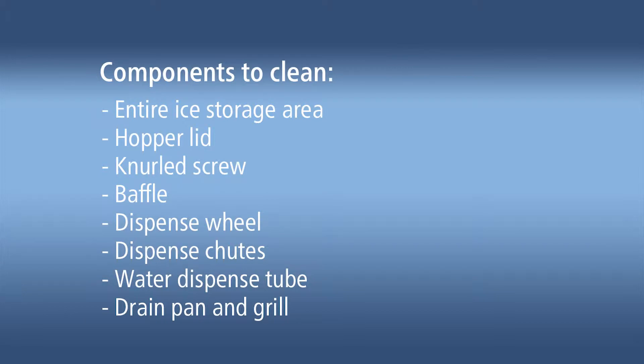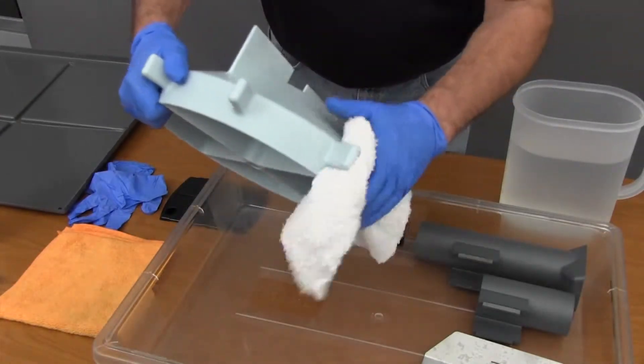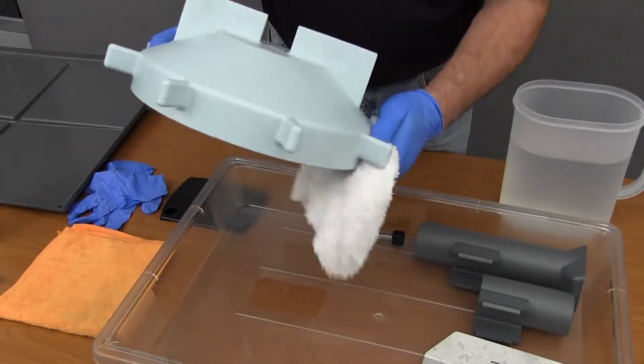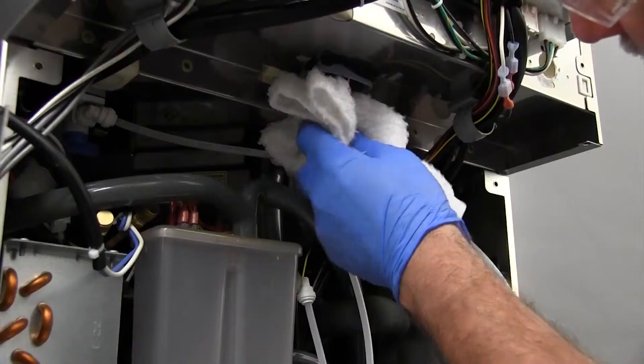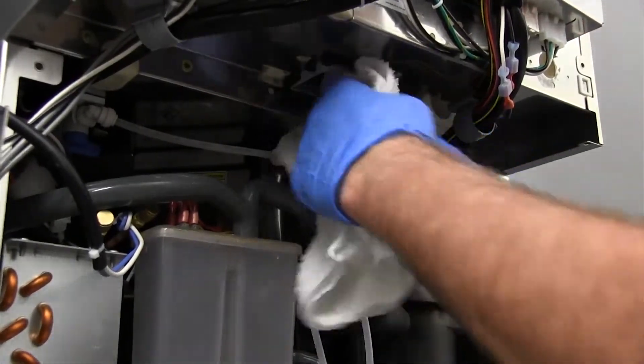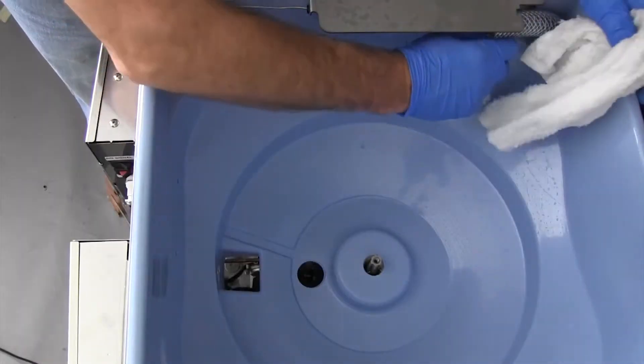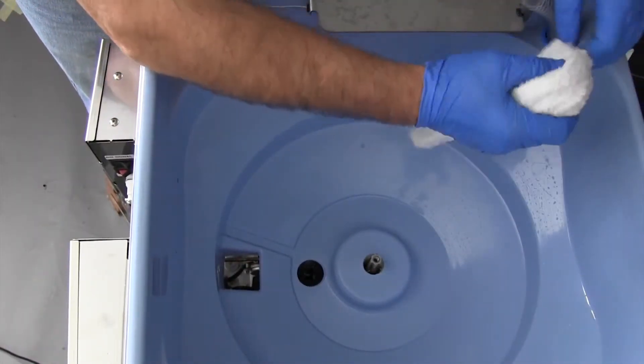Wipe each of the component surfaces with the SafeClean solution. Spraying the solution is not effective. Use only a soft cloth to avoid damage to surfaces. Do not use abrasive products, such as scouring pads.